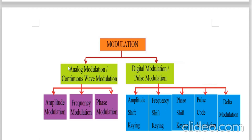Analog modulation, also called continuous wave modulation, is further divided into three categories: number one, amplitude modulation; number two, frequency modulation; and number three, phase modulation. These three are the parameters of any electrical signal. In the process of modulation, the parameters of the carrier wave are changed — amplitude, frequency, and phase. The information signal is not disturbed; no parameter of the information signal is changed. But the carrier, which is carrying the information signal, has its parameters changed.